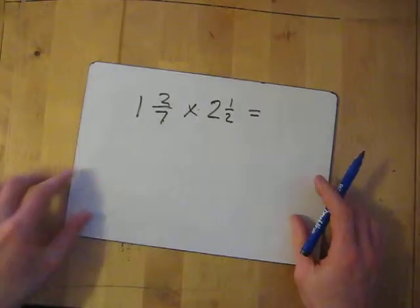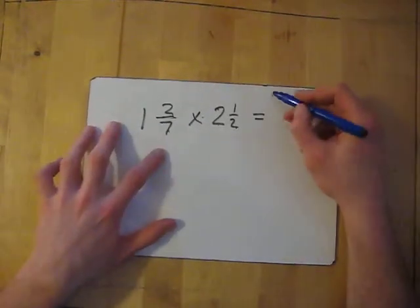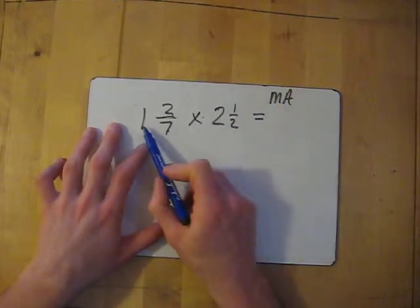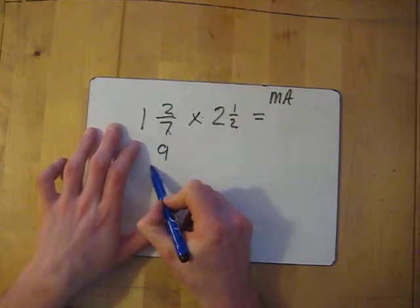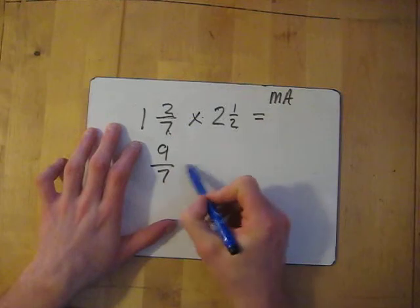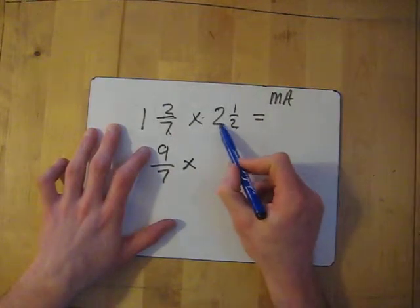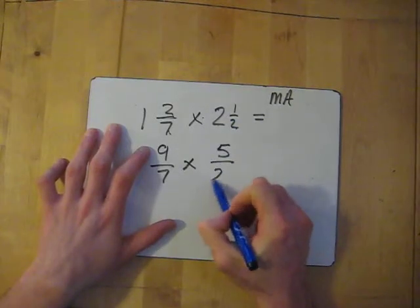So we've got 1 2/7 times 2 1/2. So first things first, MA. Convert the mixed numbers into improper fractions. So multiply the whole number by the denominator, 1 times 7 is 7, add 2, gives me 9 over 7. And the denominator stays the same. Times, multiply the whole number by the denominator, 2 times 2 gives me 4, add 1 is 5, over 2.